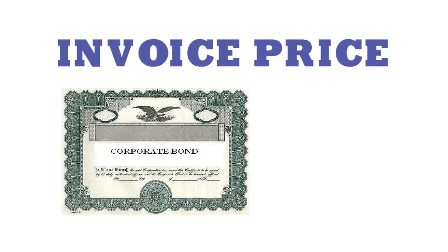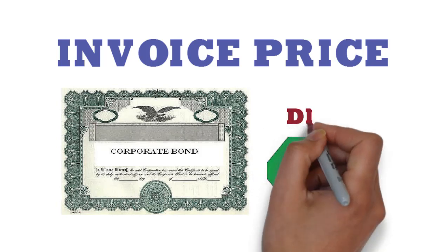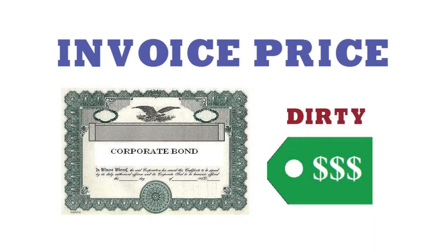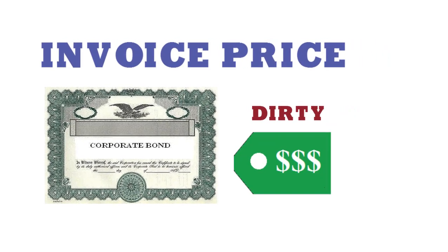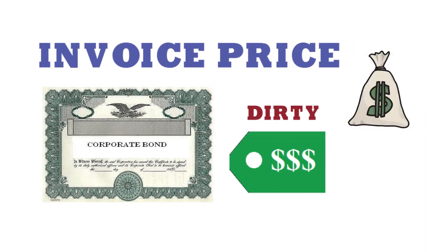The price quoted for a bond in most markets is its clean price, which doesn't include accrued interest. The dirty price is the bond's clean price plus any accrued interest. This is also called the invoice price. In other words, a bond's invoice price is the sum of the bond market price and accrued interest.